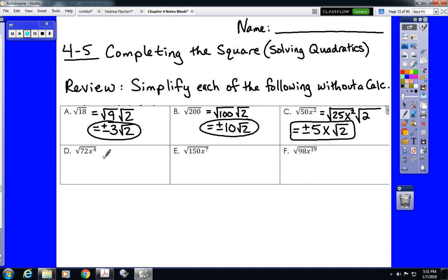Root 72x to the fourth, again 72 is not a perfect square, but it is divisible by 36. In this case we're looking at 36 times 2. And I didn't really realize when I made these notes originally how many of these were something times 2. I wish I had because I would have changed them up. x to the fourth is even, so it goes with 36. And we're looking at plus or minus 6x to the second, because we divide that exponent by 2. 4 divided by 2 is 2. And then we still have a root 2 on the end.